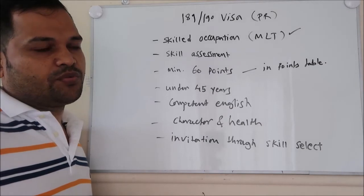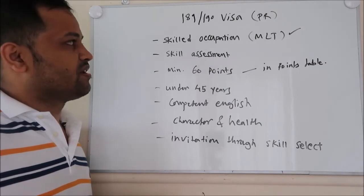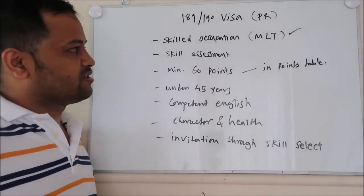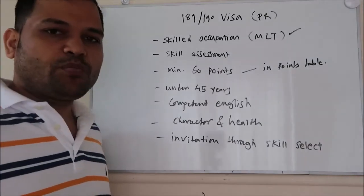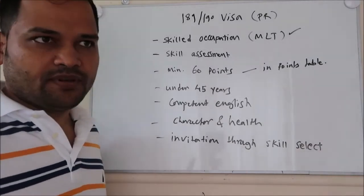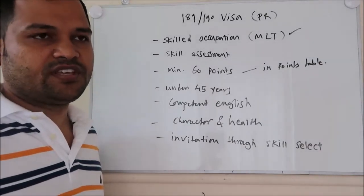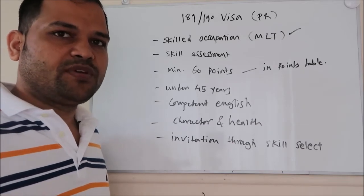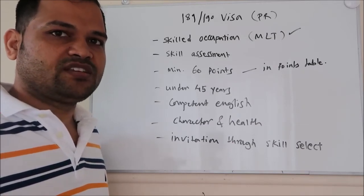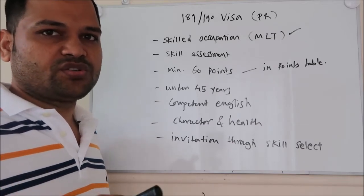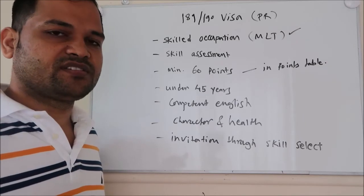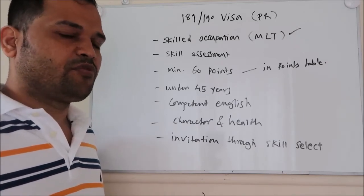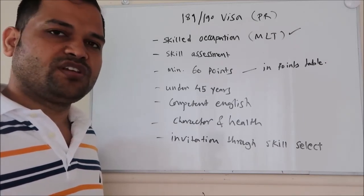Once you have your occupation, your skill assessment has to be done. For every occupation there are different assessing bodies. For example, if your occupation is in the IT field, the ACS — Australian Computer Society — will assess your skills. If you are a medical professional, then you have to go through a different body.